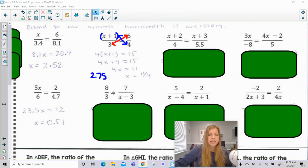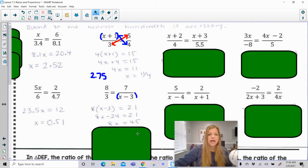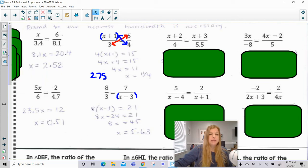The next one below it, same idea. If I do cross products, 3 times 7 is 21, but then I have to do 8 times the entire x minus 3. So it's 8 times x minus 3 equals 21. Again, I did 3 times 7 to get 21. Distribute my 8, add 24, divide by 8, and I get 5.63.